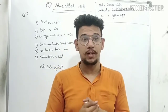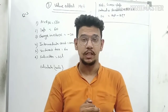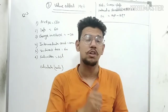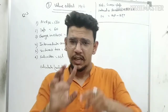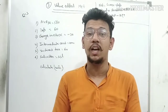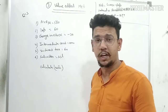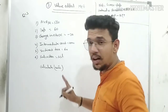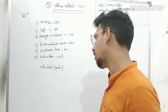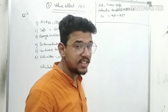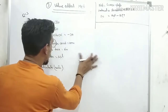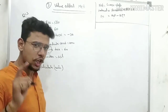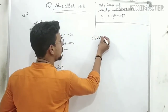Now the third question. Sometimes to confuse students, the exam doesn't ask for GVMP or NVMP directly. Instead, NVAFC is given and you need to find the sale value. Don't be scared — instead of going top-down, go bottom-up. NVAFC (Net Value Added at Factor Cost) is given.